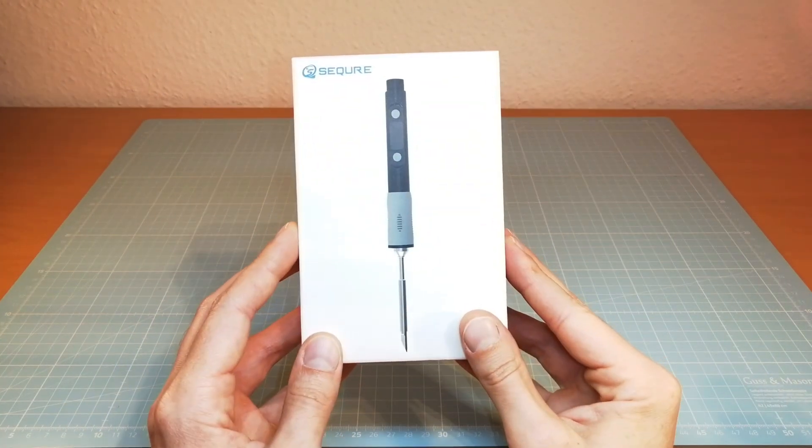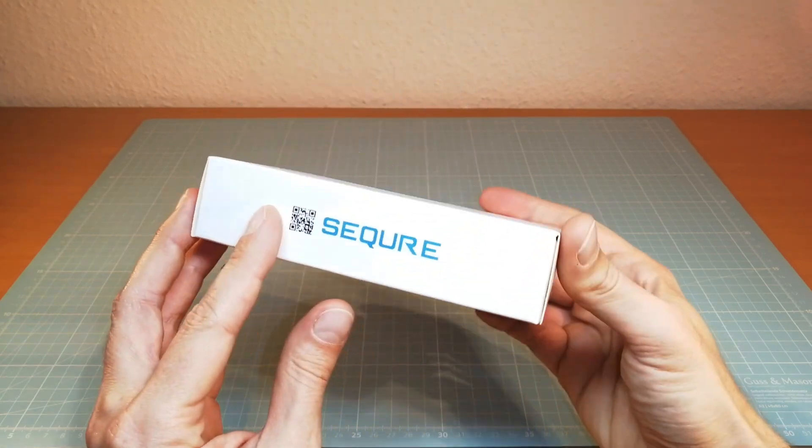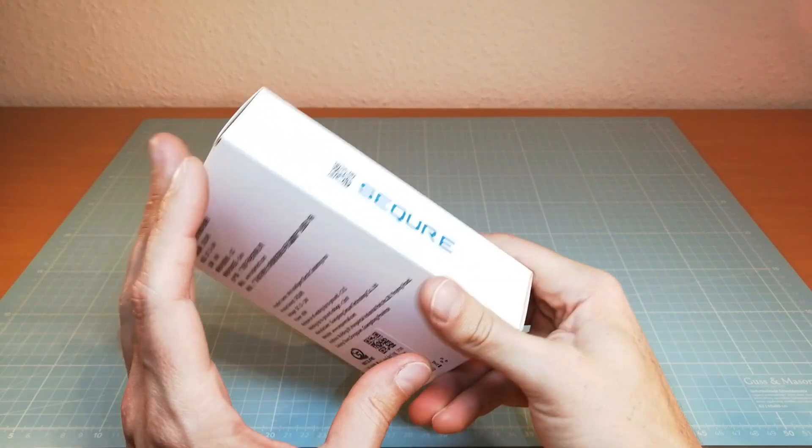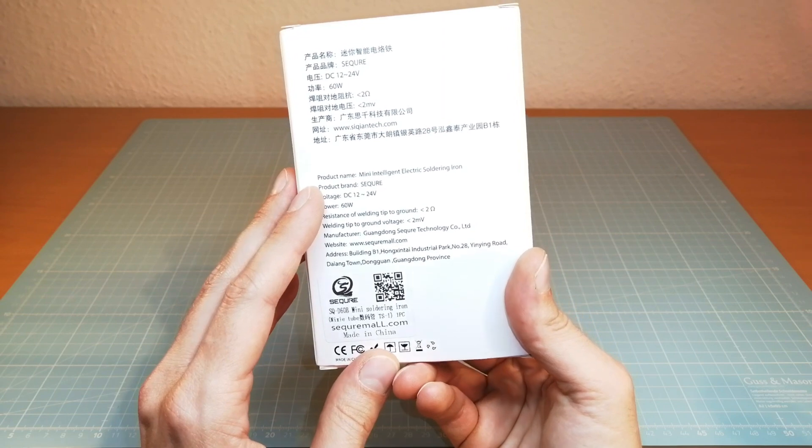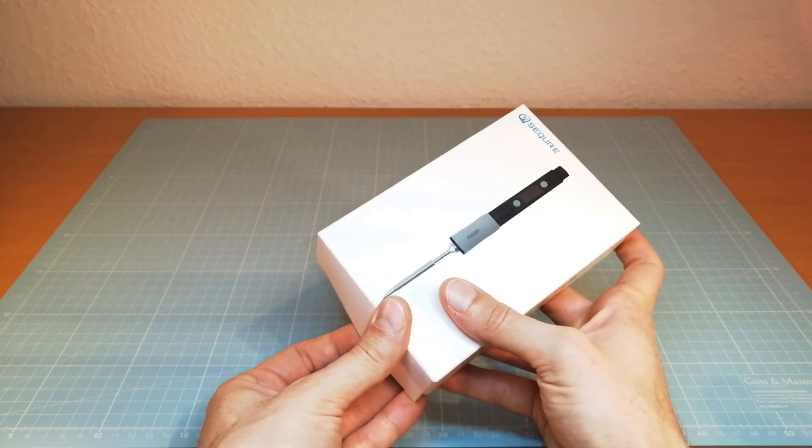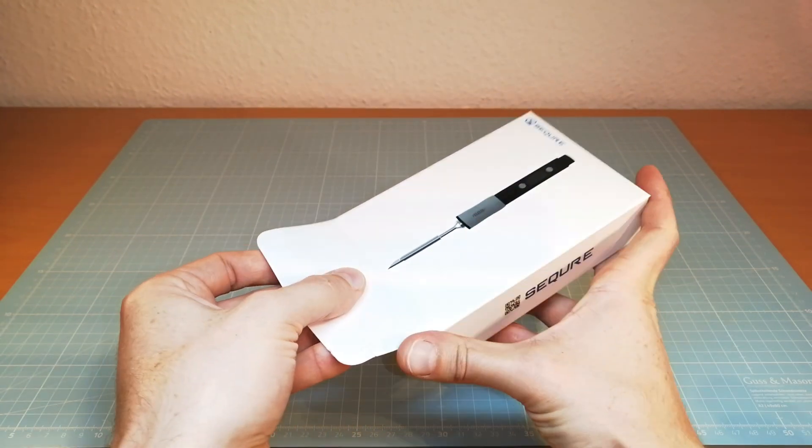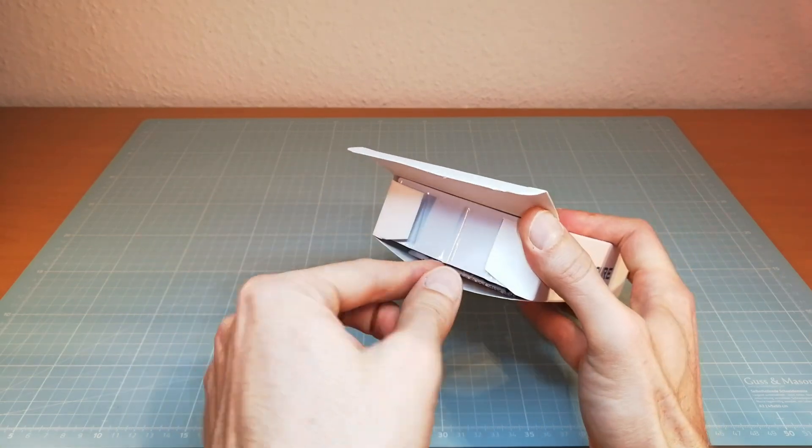This is the packaging of the Secure SGD60B. My iron comes with a TS1 soldering iron tip. First when we get it out of the box we see how small the soldering iron actually is.